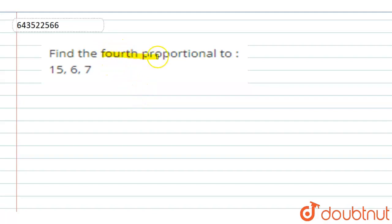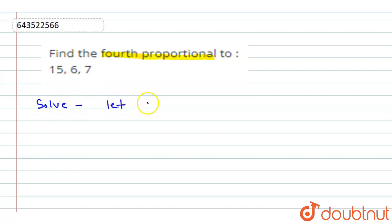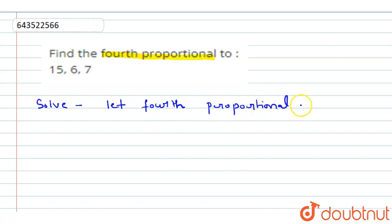Hello everyone. Our question is: find the fourth proportional to 15, 6, and 7. We have to find the fourth proportional. Since we don't know its value, we consider the value of the fourth proportional to be x.